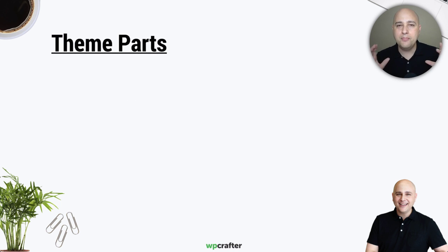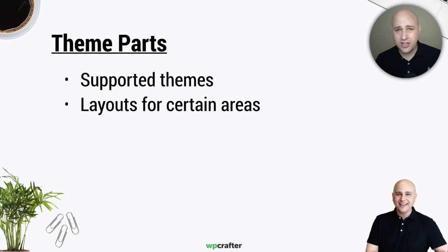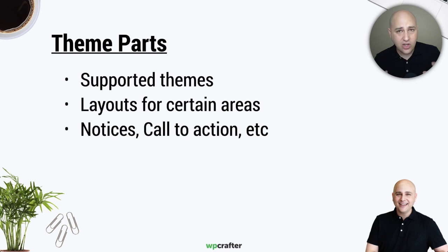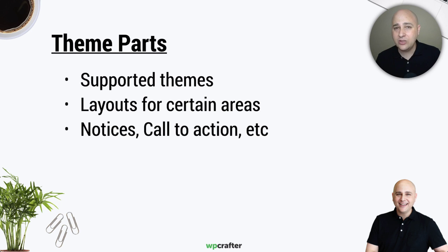Next, let's take a look at theme parts — this is a whole new concept that no one's heard of before. This feature also only works on supported themes, the same ones I talked about. You can make as many of these as you want and assign them conditionally just like with custom headers. You're already seeing things called theme parts whether you know it or not — they're typically notices or calls to action. For example, if you go to a website with a product for sale, a little notice comes up above the header saying 'This is on sale for the next three hours — buy it now.' That's an example of a notice that can now be easily implemented with a theme part.